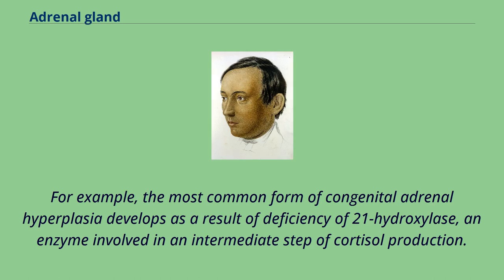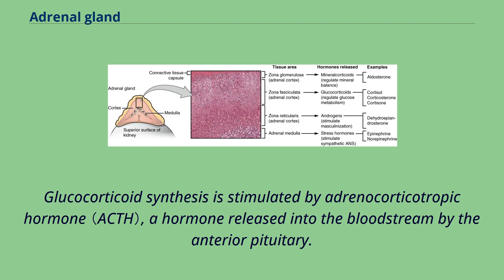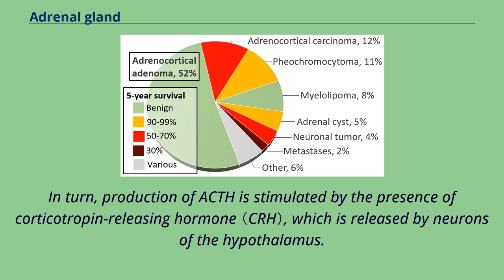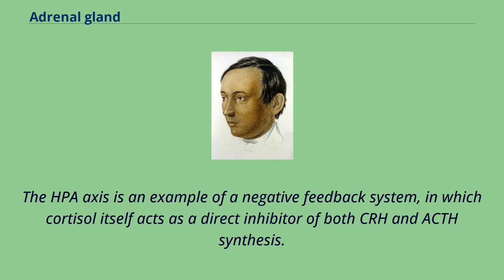Enzymes that catalyze reactions in these metabolic pathways are involved in a number of endocrine diseases. For example, the most common form of congenital adrenal hyperplasia develops as a result of deficiency of 21-hydroxylase, an enzyme involved in an intermediate step of cortisol production. Glucocorticoids are under the regulatory influence of the hypothalamus-pituitary-adrenal axis. Glucocorticoid synthesis is stimulated by adrenocorticotropic hormone (ACTH), released by the anterior pituitary. Production of ACTH is stimulated by corticotropin-releasing hormone (CRH), which is released by neurons of the hypothalamus. ACTH acts on adrenal cells by increasing levels of StAR and then all steroidogenic P450 enzymes. The HPA axis is an example of a negative feedback system, in which cortisol itself acts as a direct inhibitor of both CRH and ACTH synthesis.